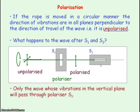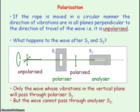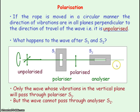At S2, the wave cannot pass through. We say S2 is our analyser because depending upon the orientation of S2 relative to S1, the wave will either pass through or not. If S2 is parallel to S1, the polarised wave will pass through, but when S2 is crossed with S1, the wave cannot pass through.